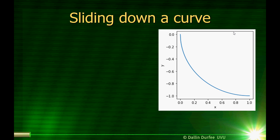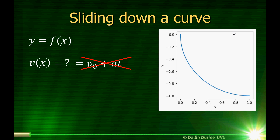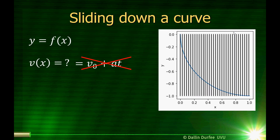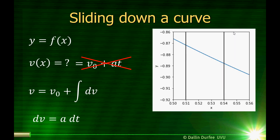What happens if we're sliding down a more complicated curve — something that's not just a flat ramp? Whatever that curve is, I'll just define y to be some function of x. Then what will the velocity be? It won't be v0 plus at, because this will not be a constant acceleration problem. The slope of the curve we're sliding down changes, so the acceleration is going to change as we change x. What we can do is divide our curve up into an infinite number of infinitesimal steps. The velocity is just the initial velocity plus a bunch of little changes in velocity that happen at each step, where each little change is just the acceleration for that slice times the time that slice lasts.